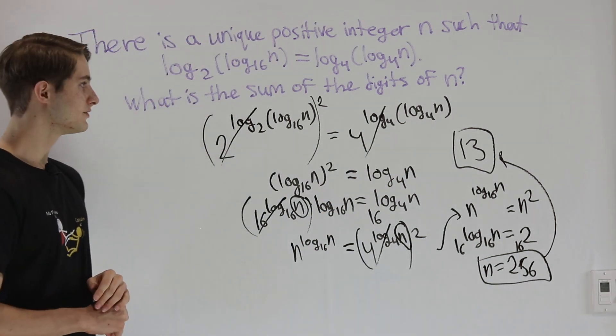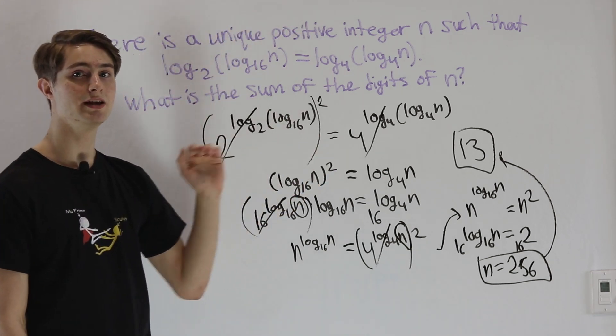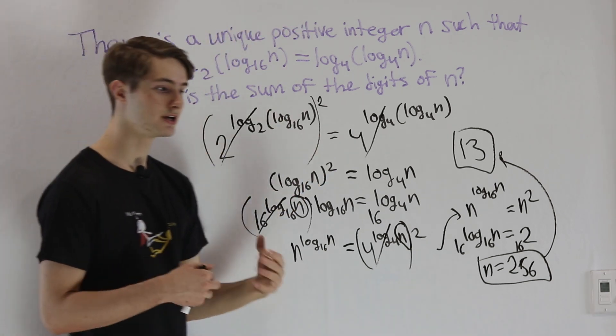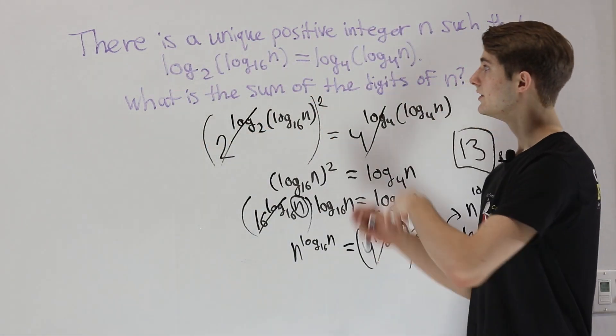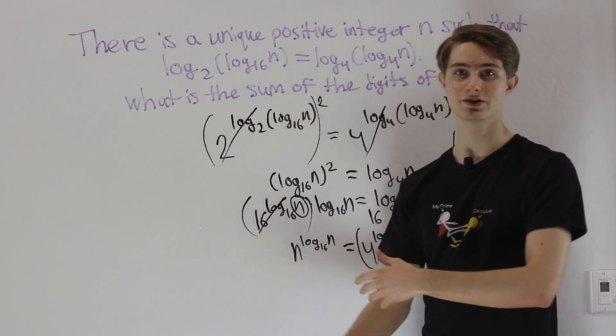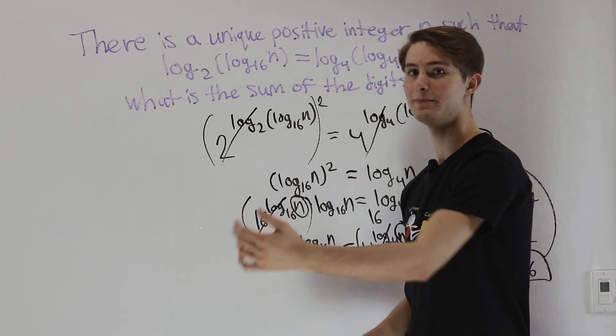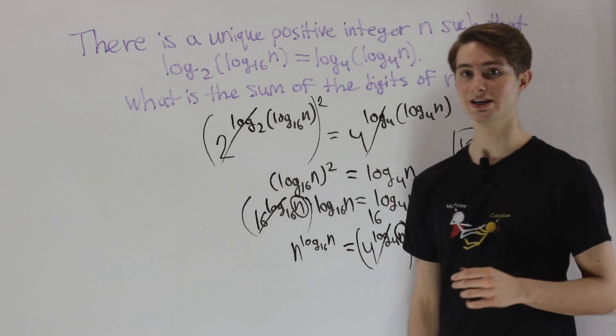The thing to take away from this process is to realize that at the beginning we had a somewhat complicated algebraic expression. Because we can see there's a way to get to a solution by simplifying all the logs and turning them into base 2, sometimes our first instinct is to just start bashing our head against that process trying to get the solution.